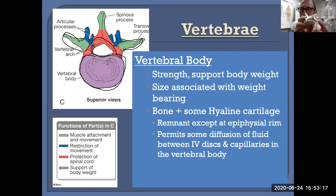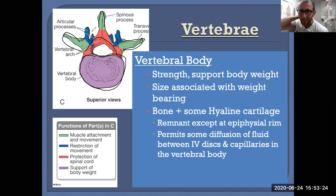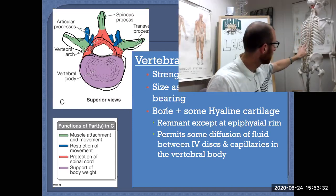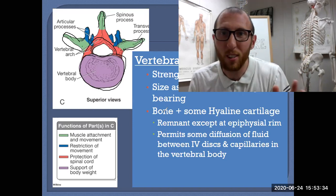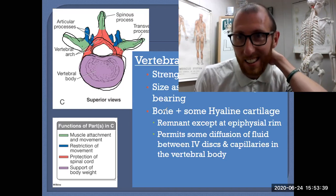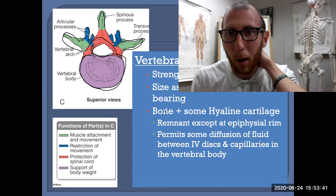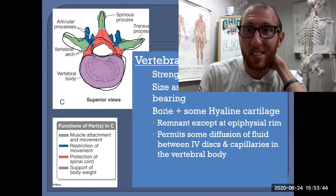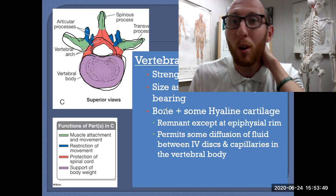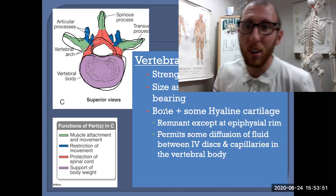The spinous process is in the back — you can actually feel your spinous processes all the way down your back. Go ahead and feel the back of your neck for that big bump; that's a specific vertebra, C7, which is the most prominent spinous process in the neck.